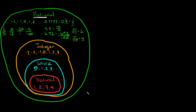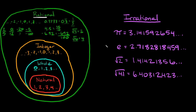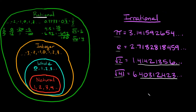The other classification of numbers are irrational numbers. They're basically decimals that don't terminate and they don't repeat. A couple well-known examples are pi — it doesn't repeat and it doesn't end, it's 3.14159 and goes forever — and the number e, which equals 2.71828 and just keeps going on forever without repeating. The other example of irrational numbers are non-perfect square roots — like the square root of 2 and the square root of 41. When you take the square root of non-perfect squares, the answer doesn't end and doesn't repeat, so they're considered irrational.